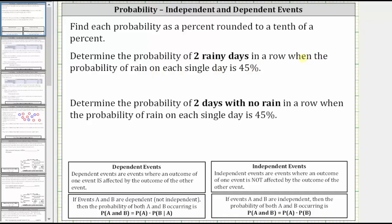Because the probability of rain on each single day is 45%, whether there is rain on the first day or not does not affect whether there is rain on the second day, and therefore the events of rain on the two days are independent events. When we have independent events, the probability of A and B is equal to the probability of A times the probability of B.